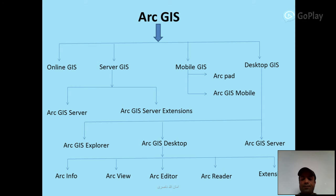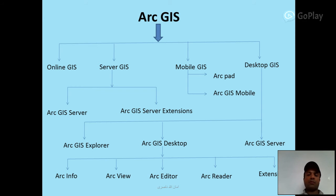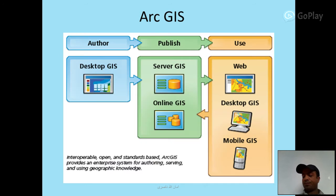ArcGIS: the ArcGIS platform includes online GIS, server GIS, mobile GIS, and desktop GIS. ArcGIS Server includes extensions. ArcGIS Mobile includes ArcGIS Mobile applications. Desktop GIS is divided into ArcGIS Server, ArcGIS Desktop, and ArcGIS Explorer. ArcGIS Desktop is further divided into five levels: Extensions, ArcReader, ArcEditor, ArcView, ArcInfo, and ArcGIS Author. Functions include authoring, publishing, and using desktop GIS, server GIS, online GIS, web desktop GIS, and mobile GIS.